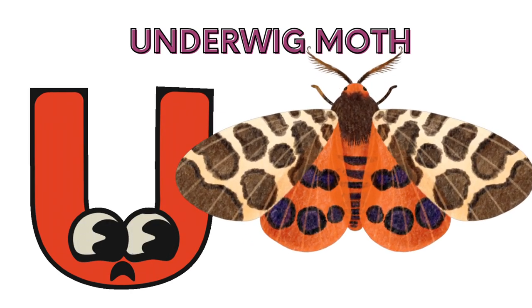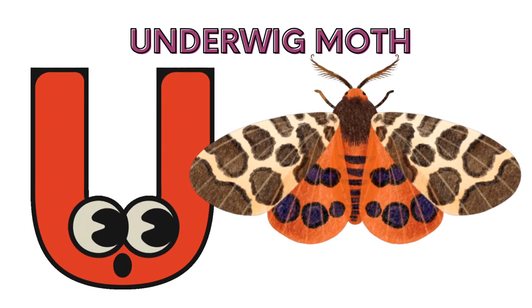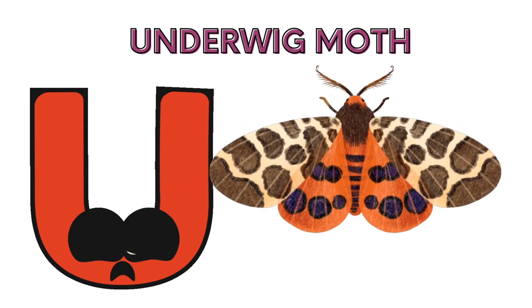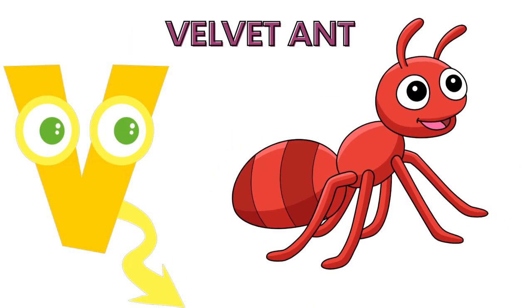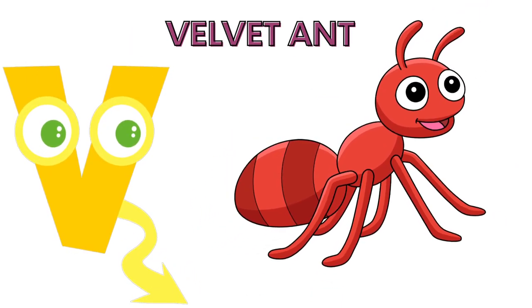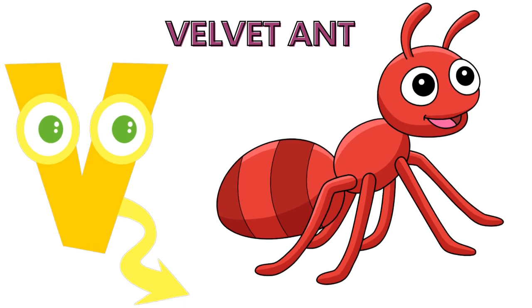U is for Underwing Moth. U, U, Underwing Moth. V is for Velvet Ant. V, V, Velvet Ant.